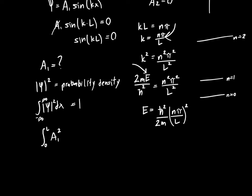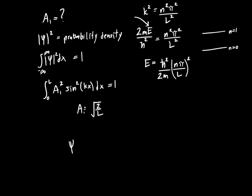So A₁² times sin²(kx) dx equals 1. And if you solve this, if you carry out the integral, you'll get that A₁ must be equal to the square root of 2 divided by L. Or our wave function, ψ, is equal to √(2/L) times sine of kx. This is our final result. We have all the information we possibly can about this quantum system. We know the wave function over all space.